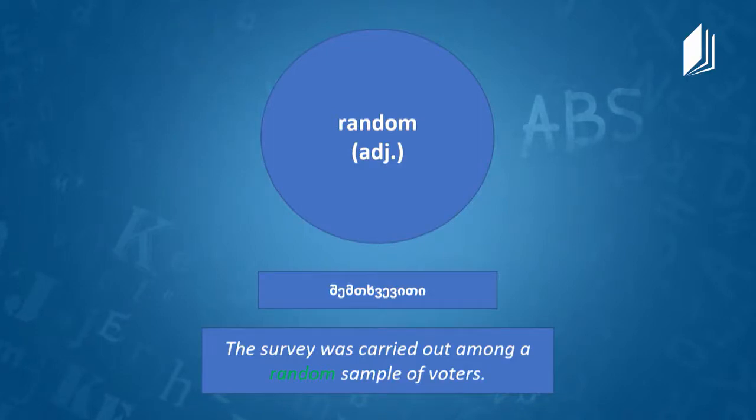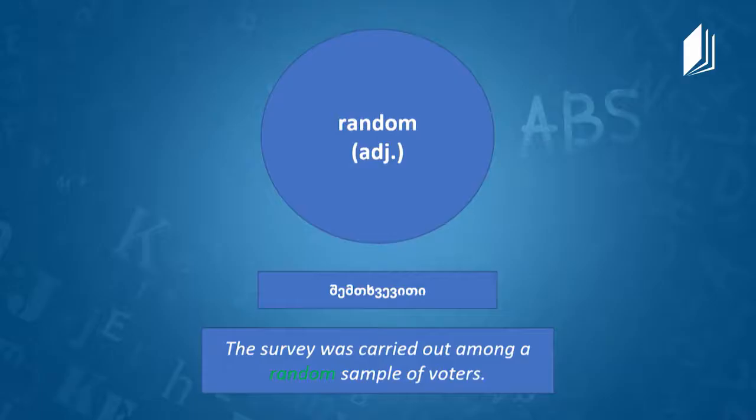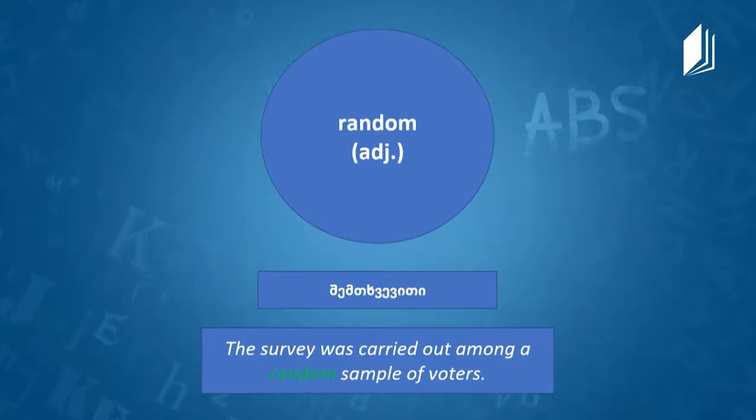The next word is random. Random is an adjective — something that happens or is done or chosen by chance rather than by a plan. Example: 'The survey was carried out among a random sample of voters' — so they were randomly chosen without any kind of preparation or plan.